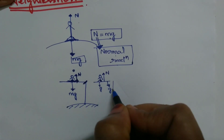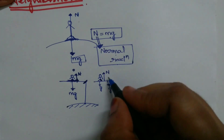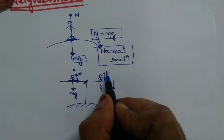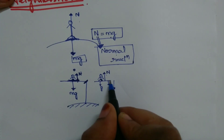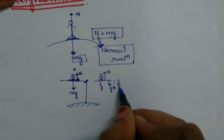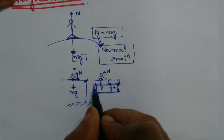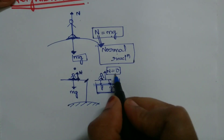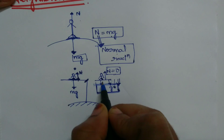Since you are not pressing, you are moving along with the platform. Because of that, there is no normal reaction. Normal reaction will come into act when your acceleration is greater than the acceleration of this platform. But you and the platform both are moving with the same acceleration due to gravity, so there is no normal reaction. Since there is no normal reaction, you will experience the condition of weightlessness.